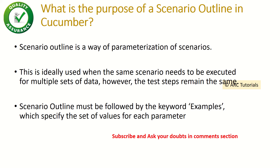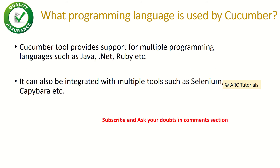The next question is: what programming language is used by cucumber? Cucumber provides support for multiple programming languages like Java, .NET, and Ruby. You can also use it with React and Angular, and it can be integrated with multiple tools such as Selenium and Capybara.